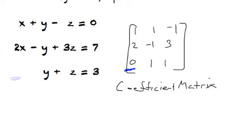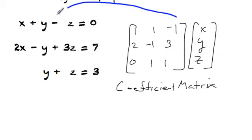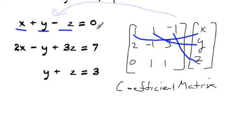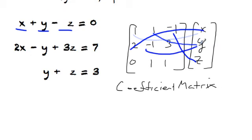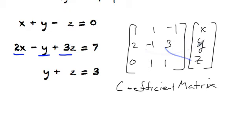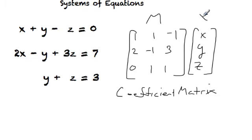If you remember your rules of matrix multiplication, if I took this and I multiply it by the vector x, y, z, I would get exactly the left side of this system back. I would get one x plus one y minus z, which is x plus y minus z. I would get two x minus y plus three z. So I can represent the left side of this equation by a simple matrix multiplication.